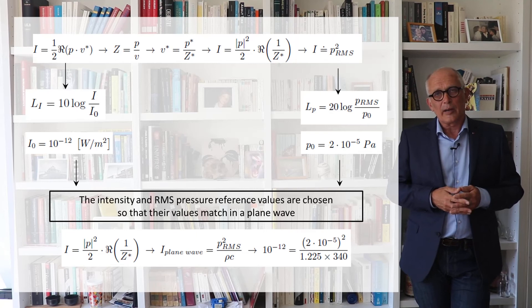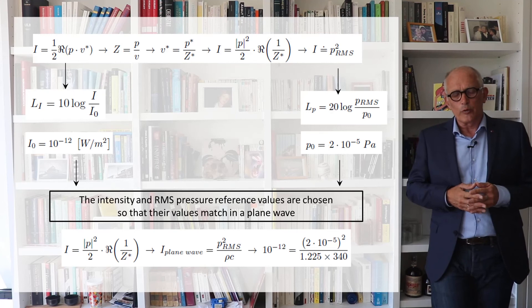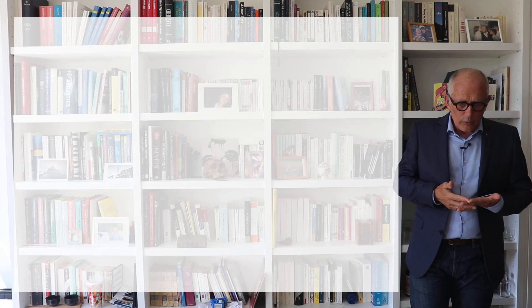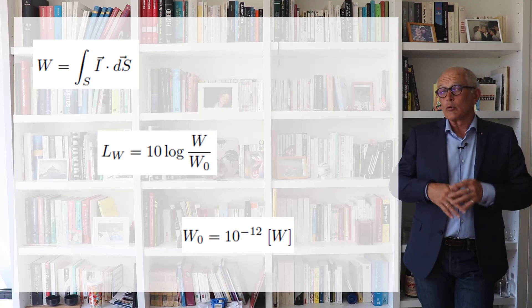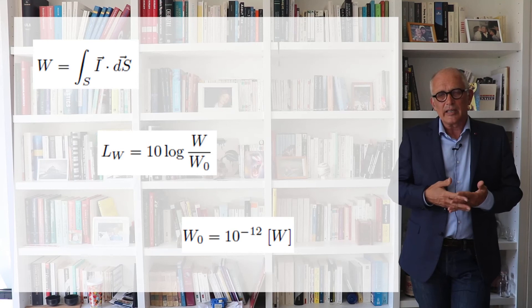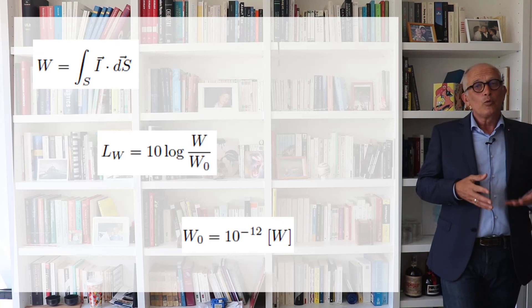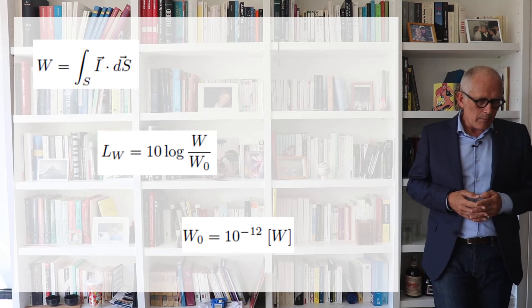We also introduce a third sound level: the sound power level. The power is simply the integral over a relevant surface of the flux of intensity, and the sound power level is defined like the sound intensity level as 10 times the log of W divided by a reference value, which is chosen at 10⁻¹² watts — the flux of the reference intensity through a surface of one square meter.